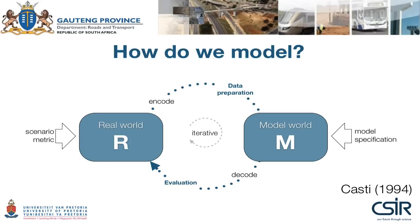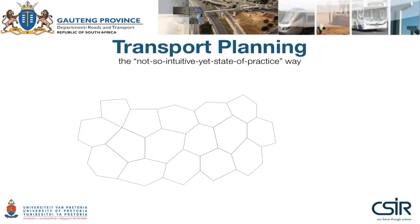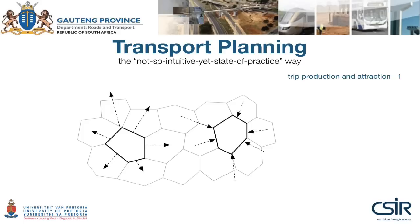So why are we concerned with transport planning? A few years ago we realized that the state-of-practice models used to support transport decisions are, firstly, not very good representations of the South African reality, and secondly, not very intuitive to understand and validate. These state-of-practice models are referred to as equilibrium assignment models, and they are indeed quite sophisticated. They are often referred to as four-step models. In the first step, called trip production and attraction, the study area is divided into zones that are similar in their traffic characteristics, and for each zone we calculate the number of trips produced and attracted.